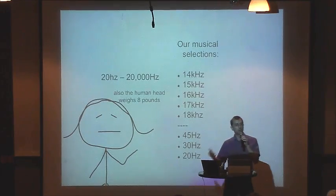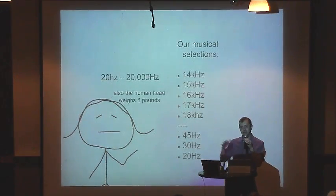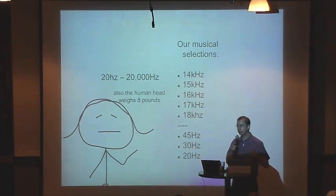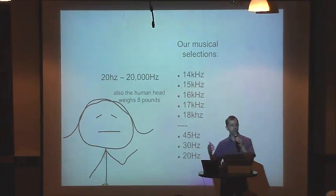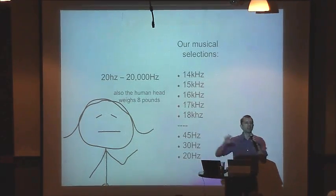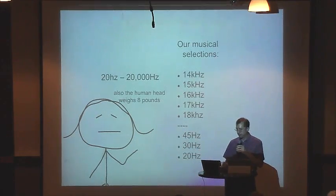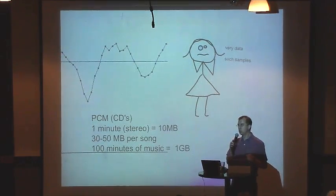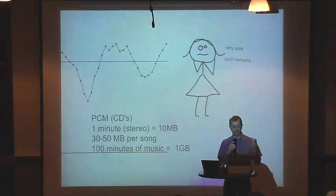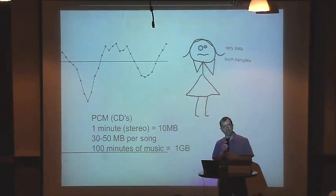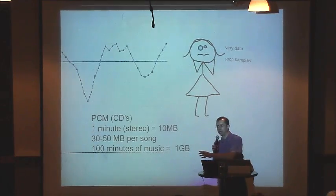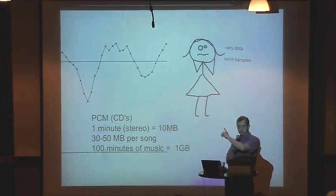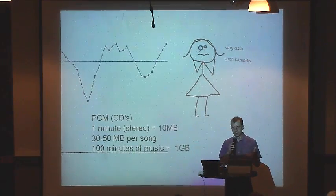The sound system can't reproduce sounds that low — below 20Hz you don't really hear it so much as feel it. PCM on a CD captures everything from the lowest to the highest frequencies, even stuff we can't perceive. But that's also a problem: PCM files are enormous — about 10MB per minute of stereo music, 1GB per 100 minutes — which is why they don't help Alice fit her music on her iPhone.